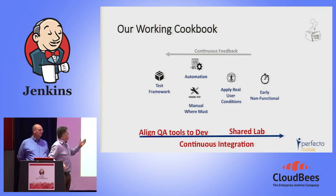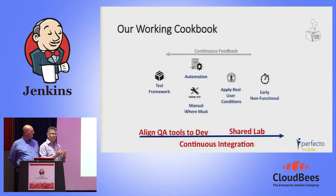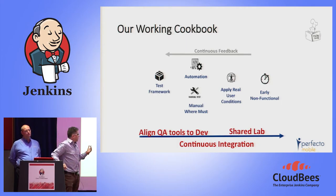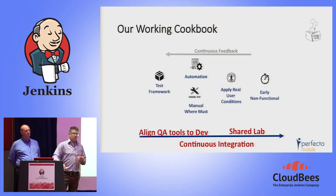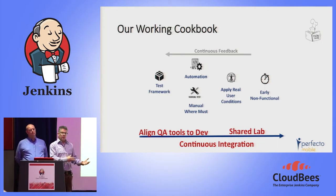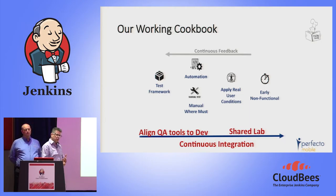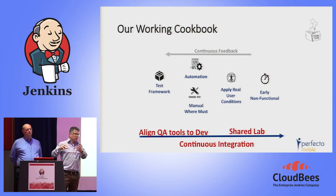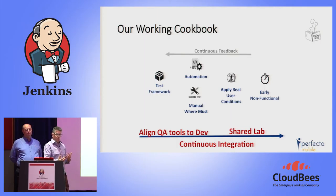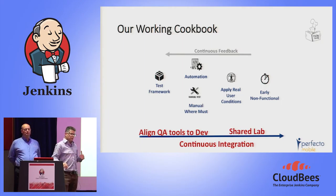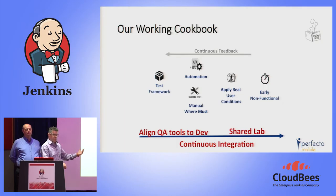Our working cookbook for continuous feedback — the shift left of feedback to developers — is that organizations today need to align their QA tools to development. Developers need access to devices and the end-user environment from their working IDEs and CI implementations. If QA is working on non-traditional developer environments like HP UFT while developers use their own tools, there's a gap and disconnect in the CI workflow between the two teams. We need alignment between QA tools and development environments.